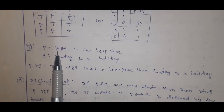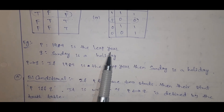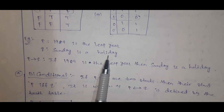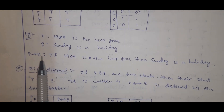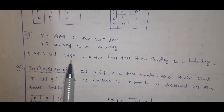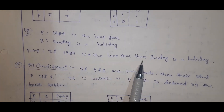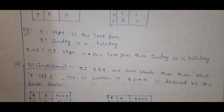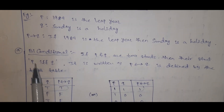Example: P is '1989 is a leap year,' Q is 'Sunday is a holiday.' Then P→Q means: 'If 1989 is a leap year, then Sunday is a holiday.'